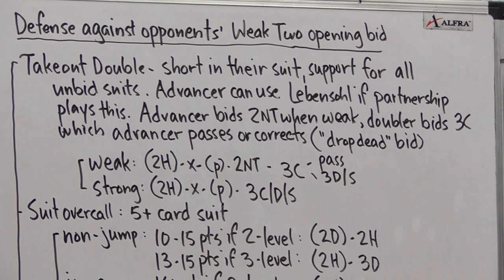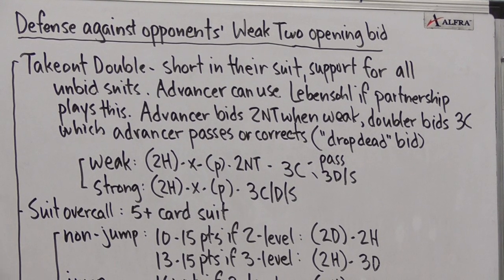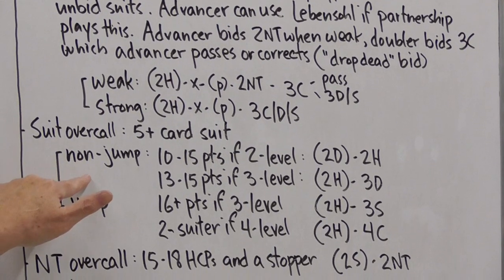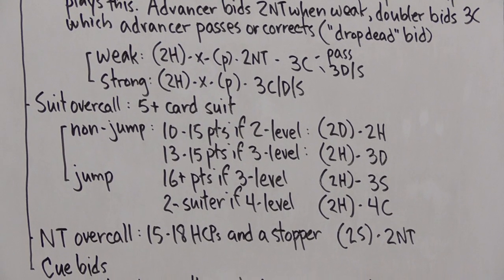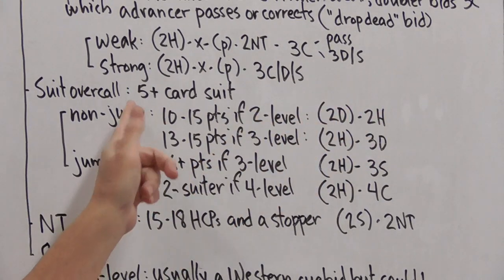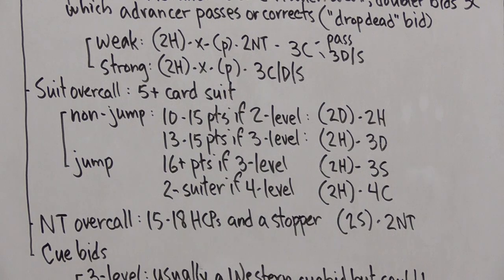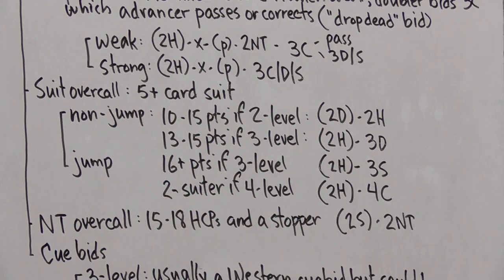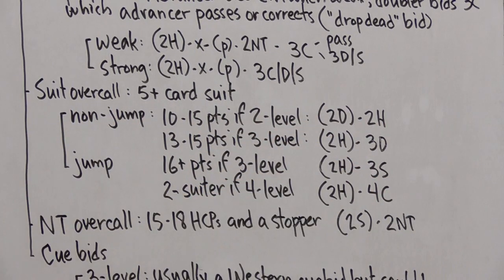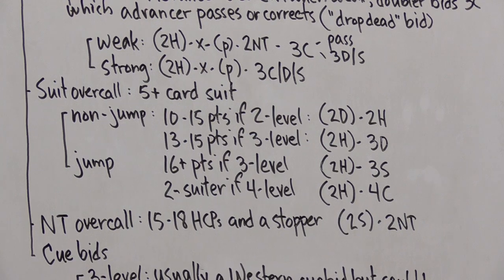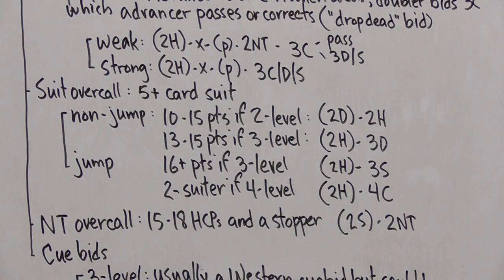Okay, another option that we have when defending against a weak two is to make a suit overcall. We're promising a five card suit. Now if we make a non-jump overcall, if we can do that at the two level, a weak two diamonds from the opponent, two hearts, we need 10 to 15 points. If we have to go to the three level, say the opening bid was two hearts and we want to show diamonds, this is also a non-jump overcall in a new suit, but we need to be a little stronger. So we probably want to be about 13 to 15 points if we're making this bid at the three level.